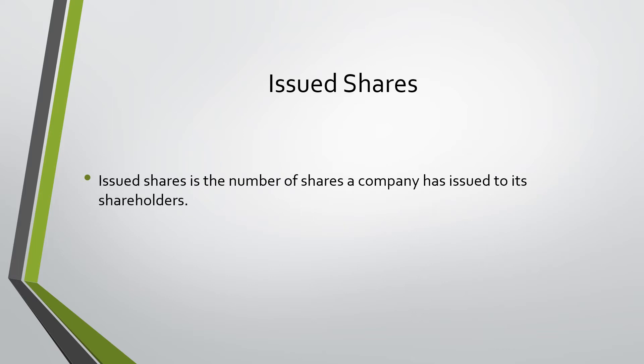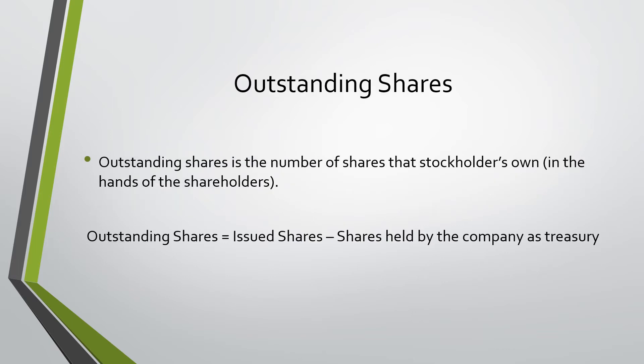Issued shares is the number of shares a company has issued to its stockholders. Outstanding shares is the number of shares that stockholders own — another way to think of this is shares that are in the hands of the shareholders.